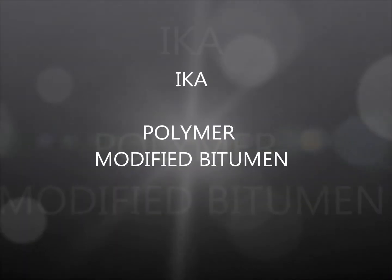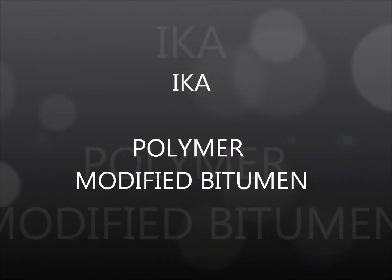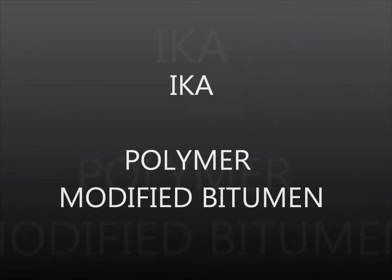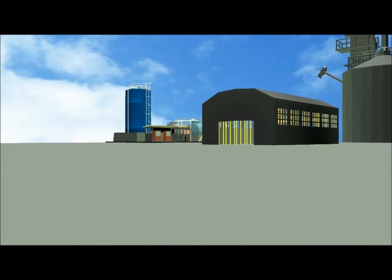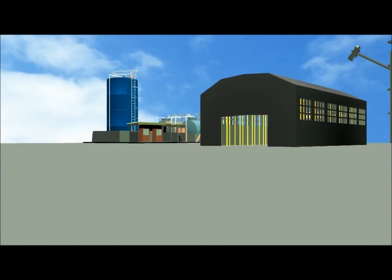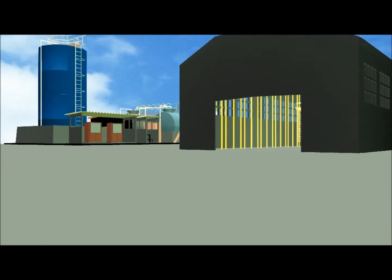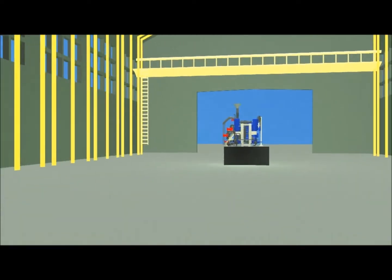Polymer Modified Bitumen Plant from IKA. IKA, the pioneer in dispersing process technology for lab to commercial scale production for various industrial applications.